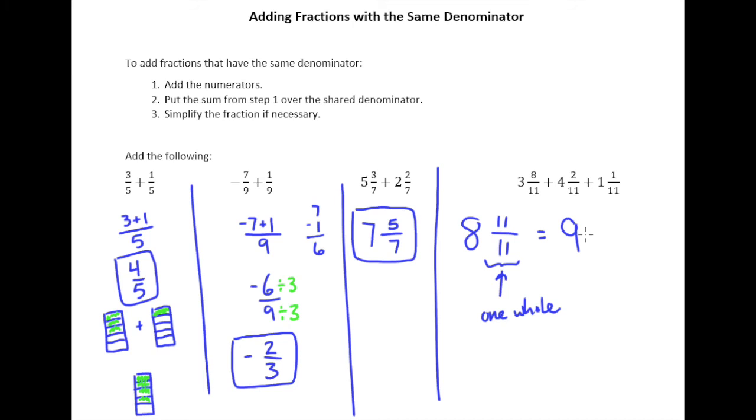So 11 elevenths becomes 1 whole which we just add to the 8. So please make sure if you end up with a situation where you get a whole for your fraction part, convert it into another whole and just add that to your whole number.